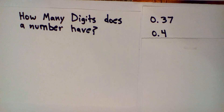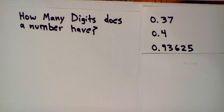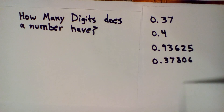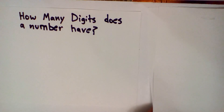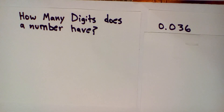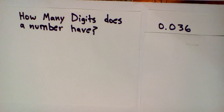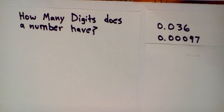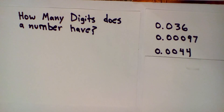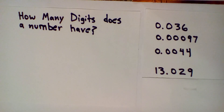Zero digits, zero, zero — I only care about the numbers to the left of the decimal point. Unless there's a zero — if there's a zero to the right of the decimal point, that counts as minus one. So this number, point zero three six, has minus one digit. Minus three digits, minus two digits.